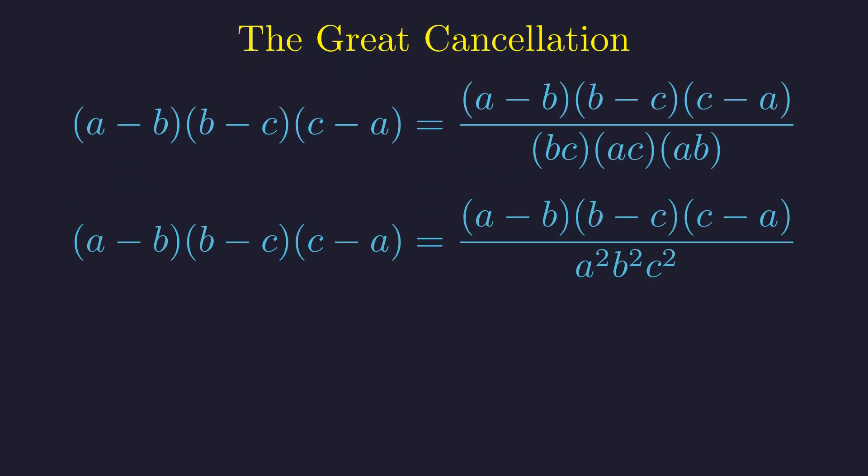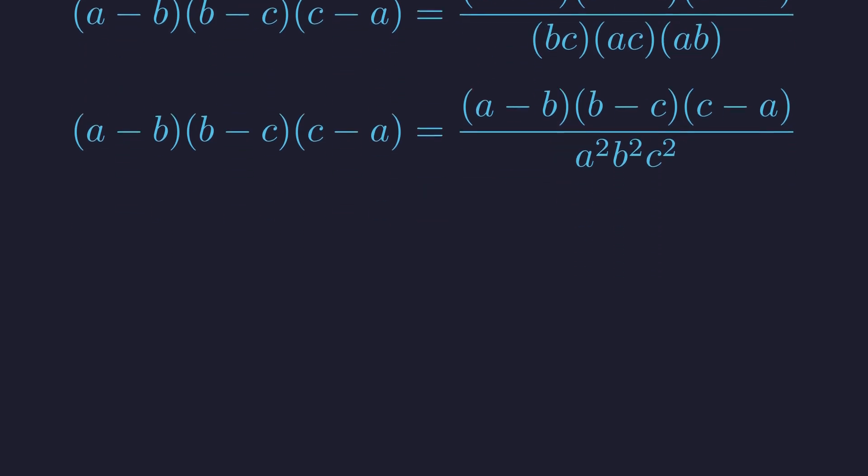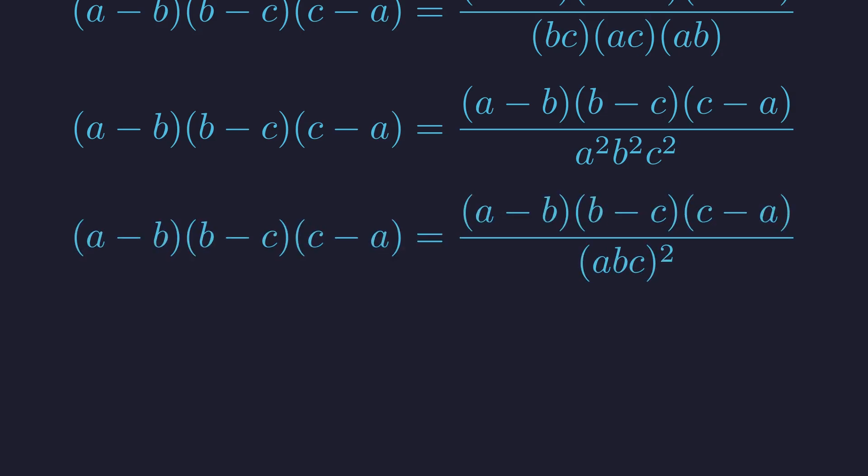We have two As, two Bs, and two Cs, which multiplies to A squared, B squared, C squared. This can be rewritten more neatly as the quantity ABC squared.